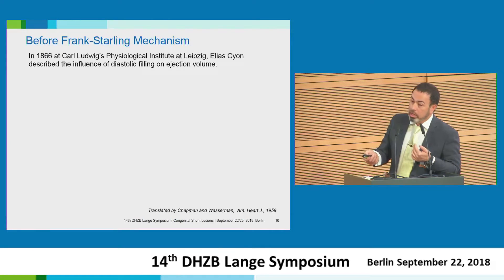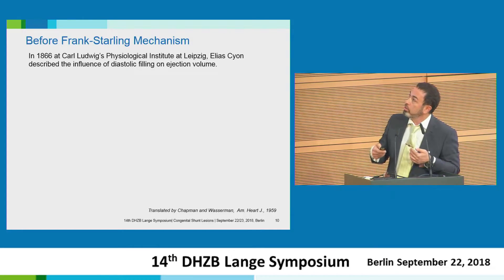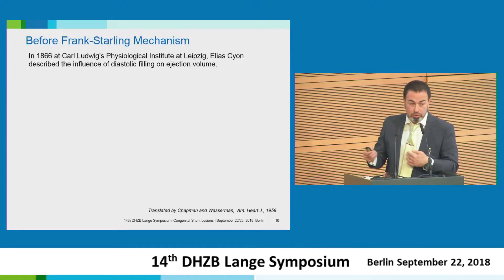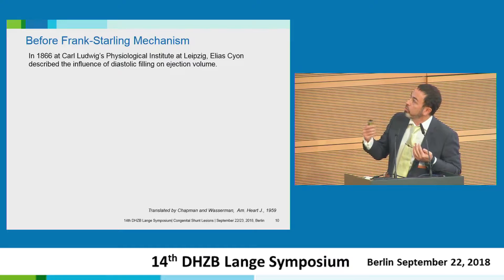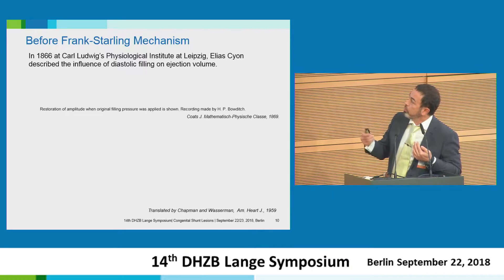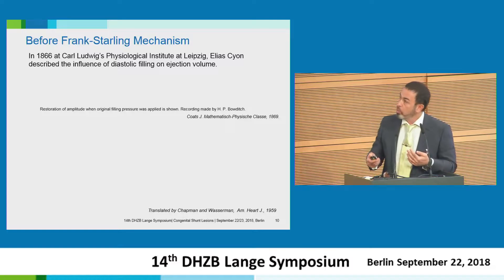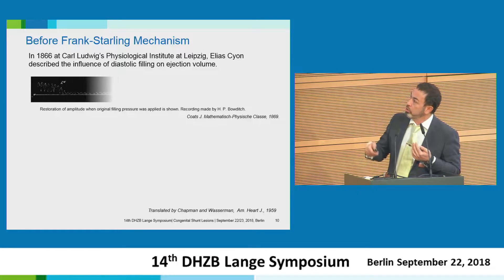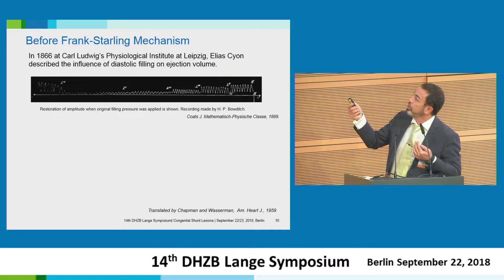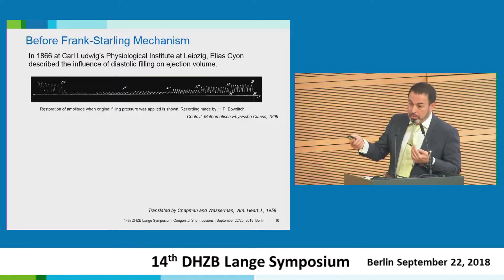I was looking into this problem of load and found that already in 1866 in Leipzig there were the first experiments with load of the ventricle, and the influence of diastolic filling as a mechanism to generate contraction. They took a heart from the frog, reduced the volume load, and then restored it — and we can see the pressure returning as contractions come back.